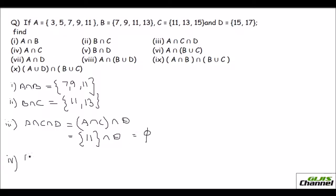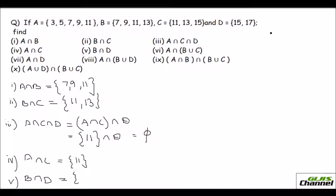The fourth one is A intersection C — looking at A and C, only 11 is common. The fifth one is B intersection D — B has 7, 9, 11, 13 and D has 15 and 17, so nothing is common. B intersection D is an empty set.